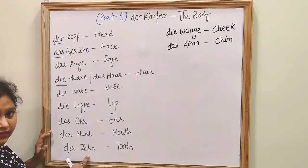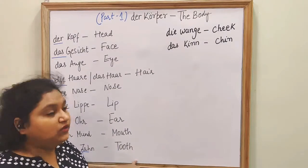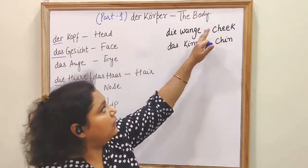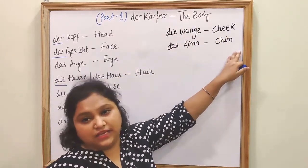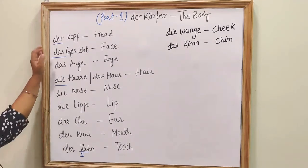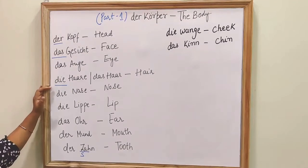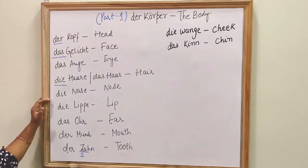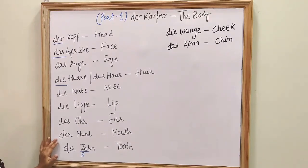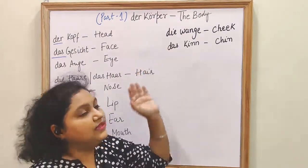'Der Zahn' — 'der Zahn', this is pronounced as Z. 'Der Zahn' is tooth. 'Die Wange' is cheek. 'Das Kinn' is chin. So let's do it once again: 'der Kopf', 'das Gesicht', 'das Auge', 'die Haare', 'das Haar', 'die Nase', 'die Lippe', 'das Ohr', 'der Mund', 'der Zahn', 'die Wange', and 'das Kinn'.